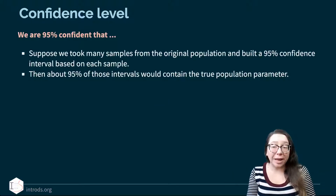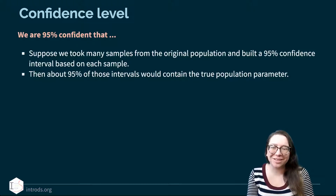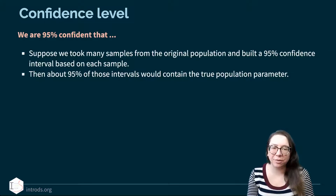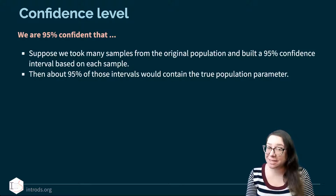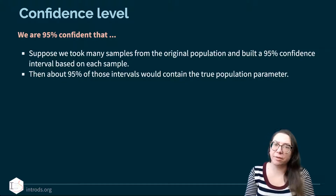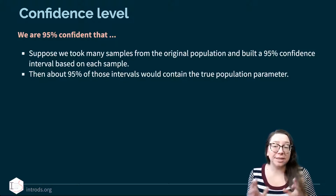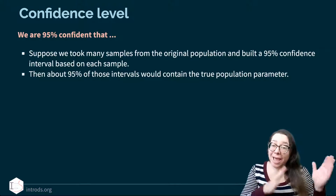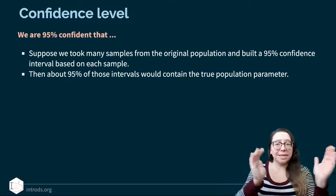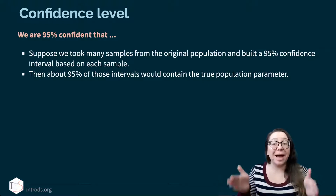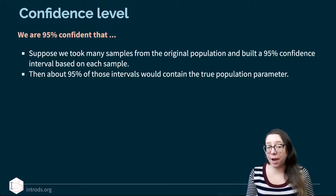Let's talk about accuracy versus precision. When we say we're '95% confident,' we mean something very precise — not like a friend saying 'I'm 95% confident I'll come to the movie' as a way of avoiding commitment. What we actually mean is: if we were to take many samples from the original population and build a 95% confidence interval based on each sample, about 95% of those intervals would contain the true population parameter. That's what the 95% statement is about.